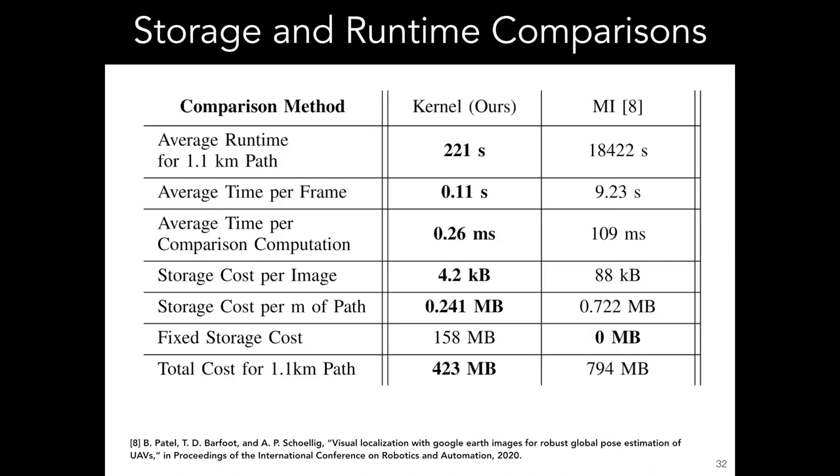The most significant improvement with our new method comes through the runtime and storage requirements. The comparisons here were made by running both methods implemented in Python on a P52 laptop. The average runtime for the 1.1 kilometer path with our method is only 221 seconds compared with 18,000 seconds for the mutual information-based approach. This improvement is based on the fact that an inner product kernel between two 1,000 dimensional vectors takes around 0.26 milliseconds, while it takes approximately 109 milliseconds to compute the mutual information between two images.